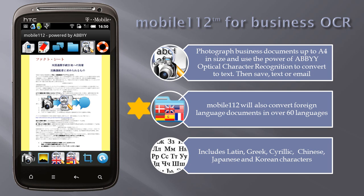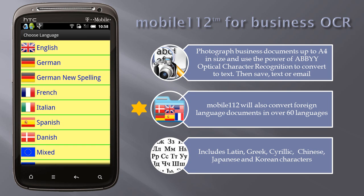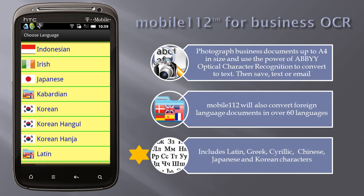Mobile 112 will also convert foreign language documents in over 60 languages. Tap the foreign language OCR button. Supported scripts include Latin, Greek, Cyrillic, Chinese, Japanese, and Korean characters.